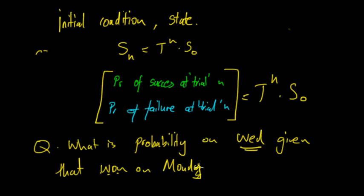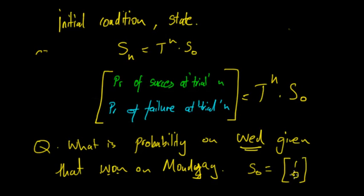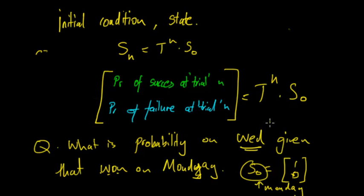So on Monday, S zero refers to that initial condition - for example one, zero, depending on the question. S zero refers to Monday. If we now want to know Wednesday, then Monday is given to us, so N is equal to two.